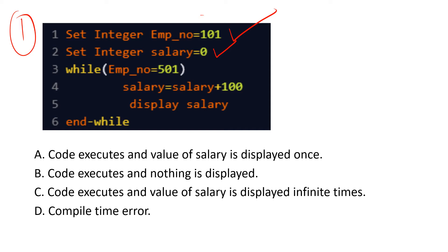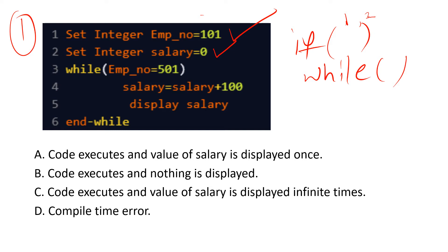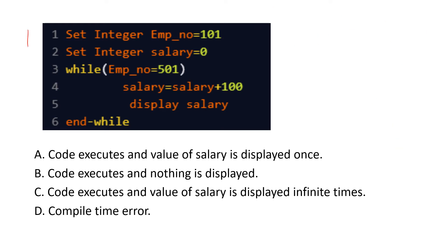The most important thing is: whenever we use if or while, if the value inside the condition is any non-zero integer, the statement will be executed. If the value is zero, the statement will not be executed. Same rule applies for while — if the integer value inside the while is non-zero, the loop will execute.